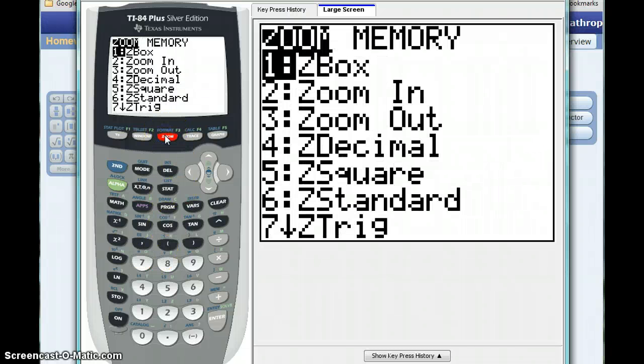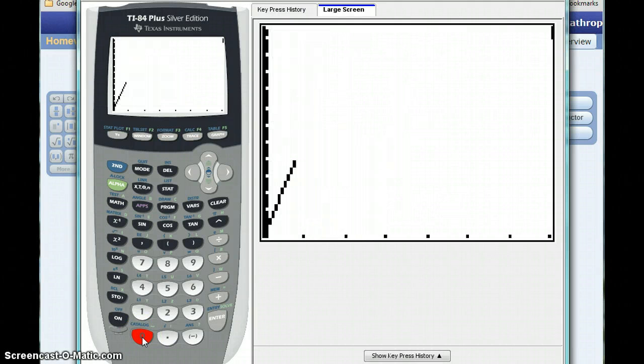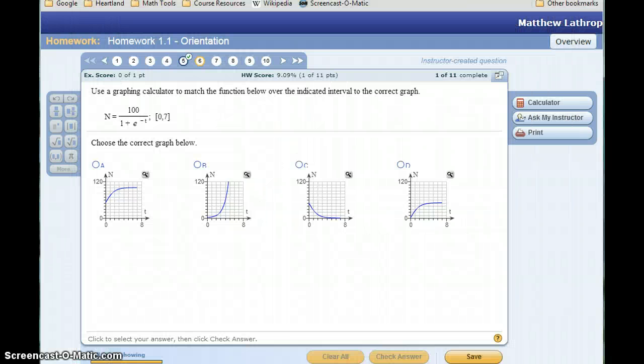We can go back to that zoom screen, and we can either scroll down, or since it's option 0, if I hit a 0 it'll access that zoom fit feature for me. Now it'll give us that graph that we're looking for, that'll match up with one of those options on the other screen. In this case it looks like what we're looking for is graph A.